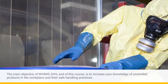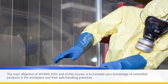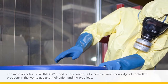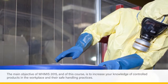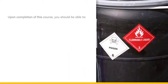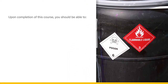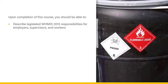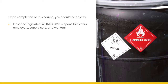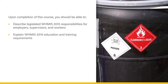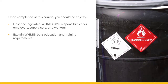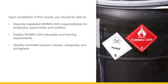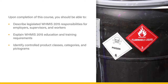The main objective of WHMIS 2015 and of this course is to increase your knowledge of controlled products in the workplace and their safe handling practices. Upon completion of this course, you should be able to describe legislated WHMIS 2015 responsibilities for employers, supervisors, and workers. Explain WHMIS 2015 education and training requirements. Identify controlled product classes, categories, and pictograms.